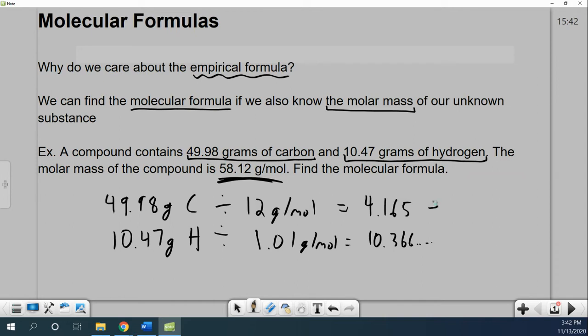All right. If I want the molecular formula, I've got to divide them both by the smallest one. 4.165, well, that'll give me 1. 10.366 divided by 4.165 gives me 2.5. And I can't have decimals, so I've got to double them. So my empirical formula is carbon 2 hydrogen 5.